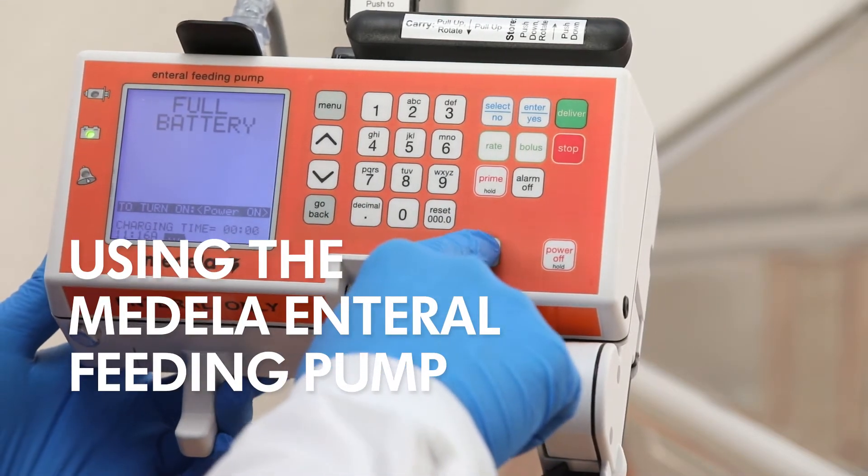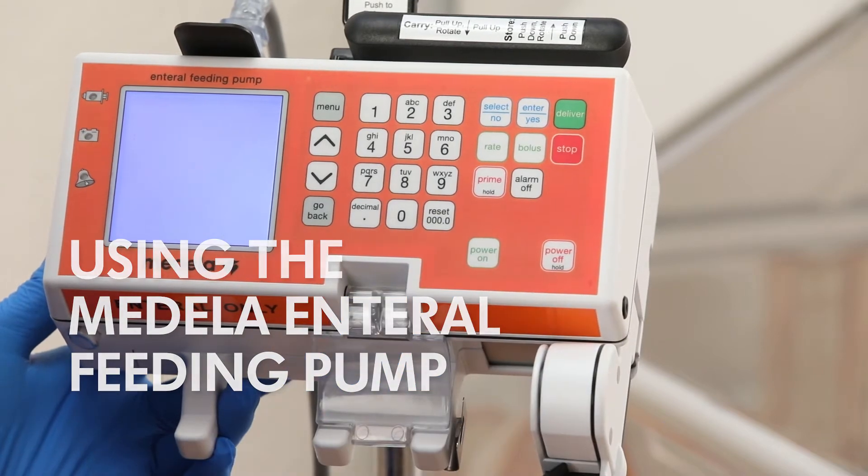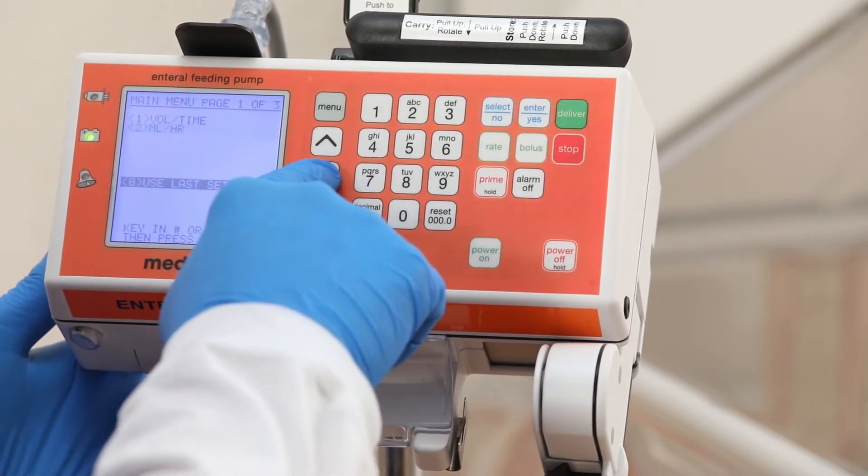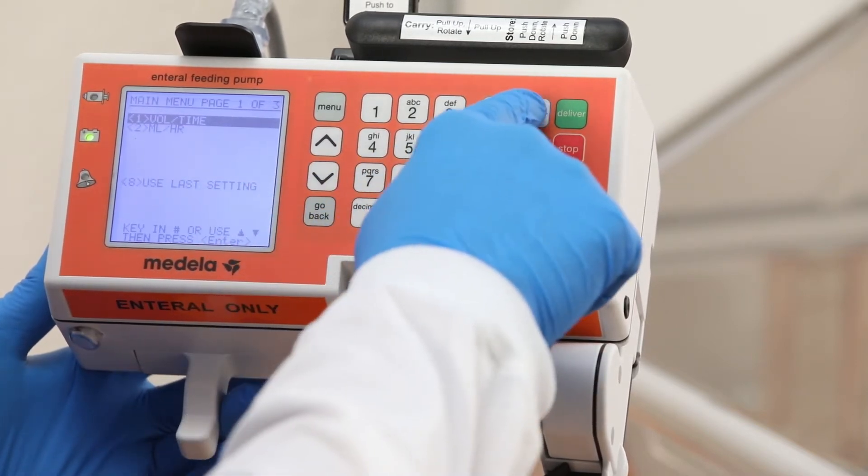To turn the pump on, press the power on key. Use the arrow keys to select volume over time, milliliters per hour, or use last setting, then press the enter/yes key.